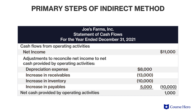The logic of the indirect method is that if a company had an $8,000 depreciation expense on the income statement, this expense would cause net income to decrease by $8,000, but no cash was actually paid out. Therefore, the indirect method would add back $8,000 to net income in order to arrive at cash flows from operating activities.